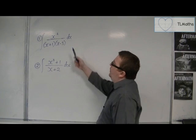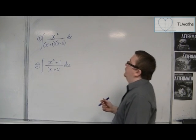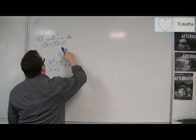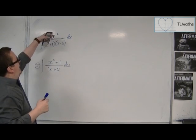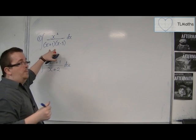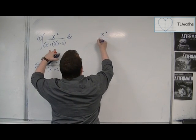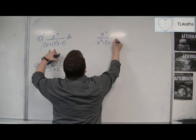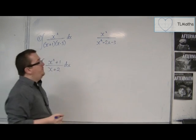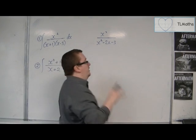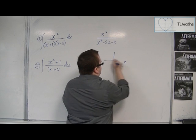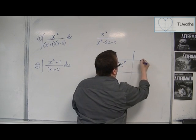So, x squared over (x+1)(x-3). First of all, I'm going to write this as x squared over the expanded form. So x squared over x squared minus 2x minus 3.